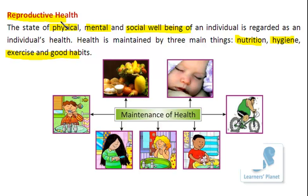When health is related to reproductive health, during puberty there are many behavioral changes taking place in an individual. The body grows, so nutritional requirements are more. Since they are developing new features, they show different characteristics in their behavior. The emotional level is also changing, and behavior towards the opposite sex changes. A proper health is to be maintained through some basic practices. Reproductive health is not only related to being free of disease, but to the well-functioning of the body.